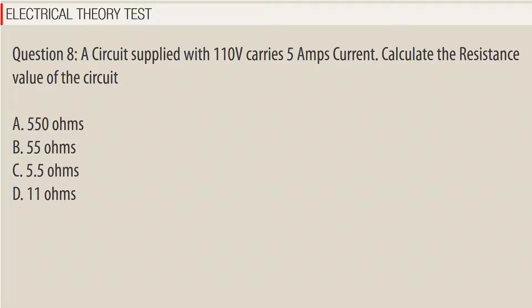Question 8: A circuit supplied with 110 volts carries 5 amps current. Calculate the resistance value of the circuit. a) 550 ohms, b) 55 ohms, c) 5.5 ohms, d) 11 ohms. Answer: D.